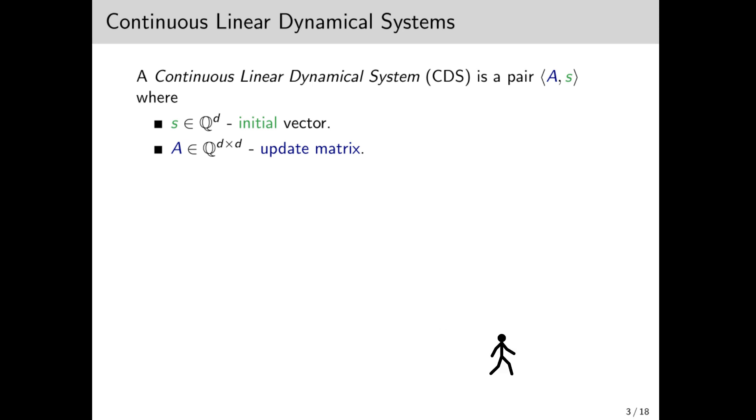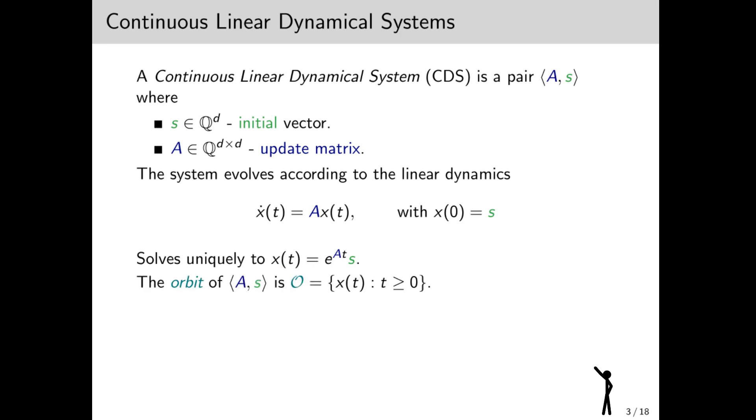Formally, a continuous linear dynamical system (CDS) is given by an initial vector s and a rational update matrix A. The system evolves according to the dynamics ẋ(t) = Ax(t), with the initial point x(0) being s. As it turns out, these dynamics uniquely define the function x(t). In fact, the unique solution is x(t) = e^(At)s. Then, we define the orbit of the system to be the trajectory of the function, that is, all the points it visits.